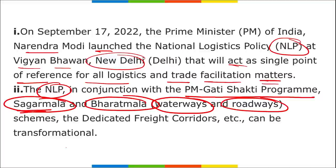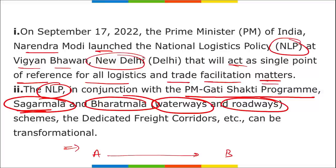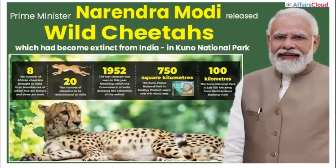The National Logistics Policy will work alongside PM Gati Shakti, Sagar Mala (related to waterways), and Bharat Mala (related to roadways) as dedicated freight corridors. This will be transformational and game-changing for India. It will promote ease of doing business and also reduce the cost of logistics — meaning reduced transportation costs whether by waterways, railways, or roadways. This was launched at Vigyan Bhavan, New Delhi by PM Narendra Modi.